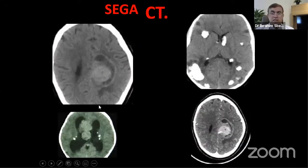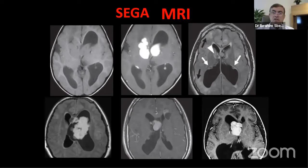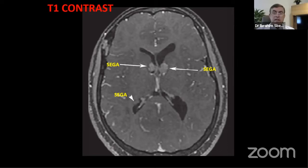The SEGA is concentrated around the foramen of Monro and is associated with subependymal nodules, cortical and subcortical tubers. On T1 with contrast, the SEGA is visible and can be bilateral, which is most dangerous. Bilateral SEGA at the foramen of Monro can present with acute hydrocephalus and can kill patients.